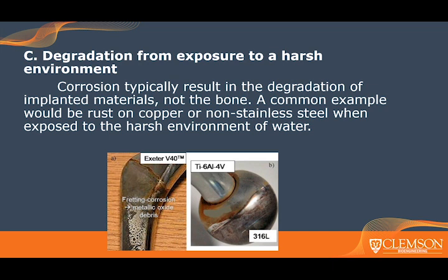Answer choice C — degradation from exposure to a harsh environment — is not stress shielding but is corrosion. Corrosion is typically seen as rust on iron-based products or as the green tarnish on pennies, and can result in a loss of mechanical properties due to pitting and loss of material. In a biomedical context, corrosion can also cause a stronger foreign body reaction due to new or different chemicals becoming present throughout the corrosion process.